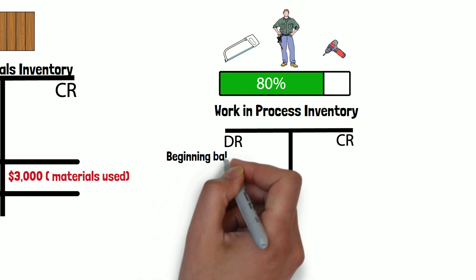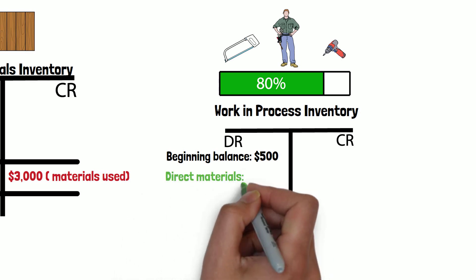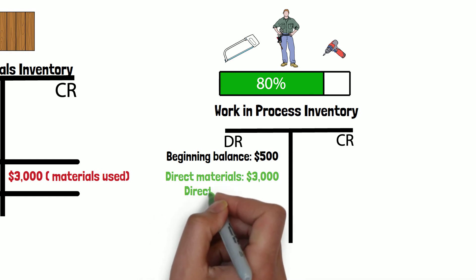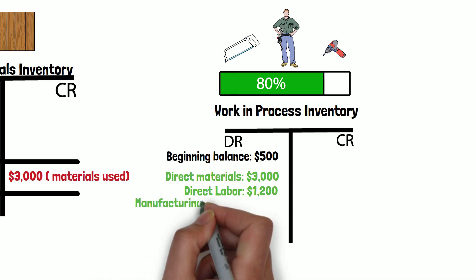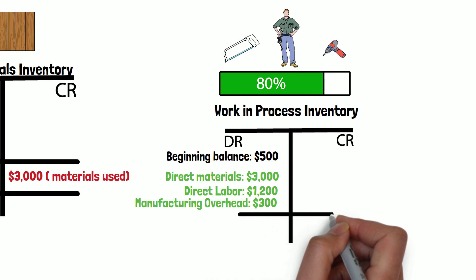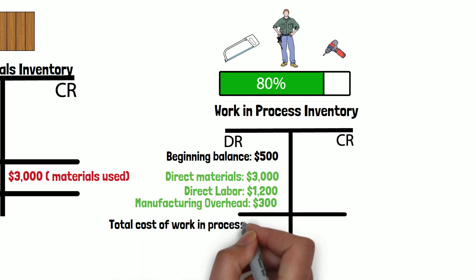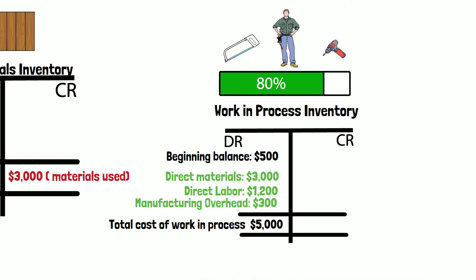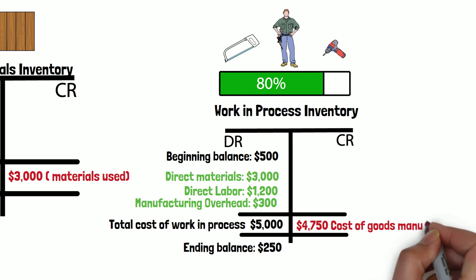Now let's take a look at the work in process inventory. Suppose the beginning balance is $1,500, and we know we used $3,000 in direct materials. Assume the direct labor cost is $1,200 and the manufacturing overhead is $3,000. When we add all these numbers together, this gives us the total cost of work in process, which is $8,700. Assume the ending balance for this inventory is $2,500, so the cost of goods manufactured is $4,750.